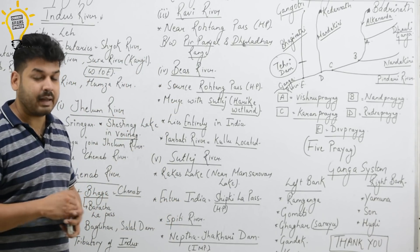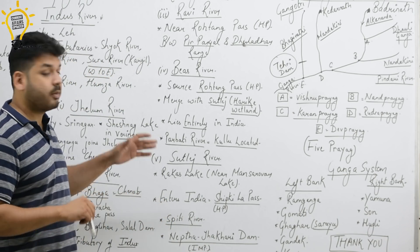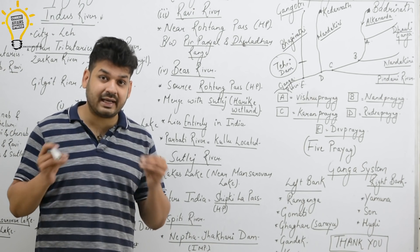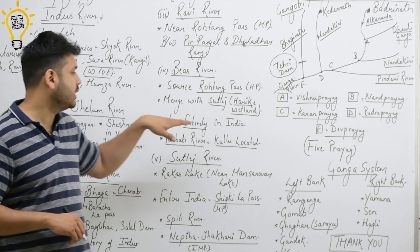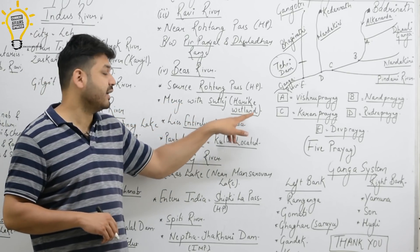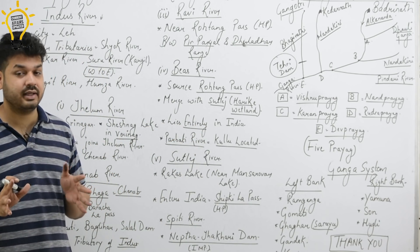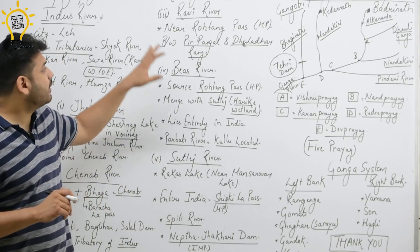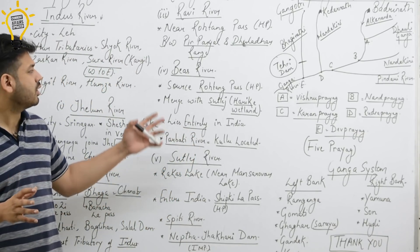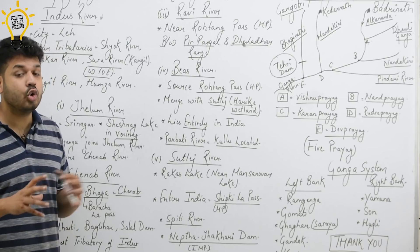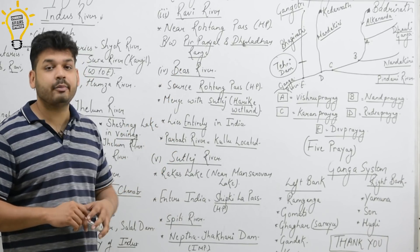The next tributary is Vyash (Beas) River. Vyash lies entirely within India — this is an important question. It originates from Rohtang Pass in Himachal Pradesh and merges with the Satlaj River in Punjab, where it forms the famous Harike wetland, which is also a Ramsar Convention site. A famous tributary of Vyash is the Parvati River, and the city of Kullu is situated on the Beas River.